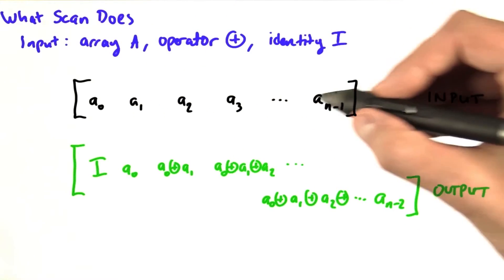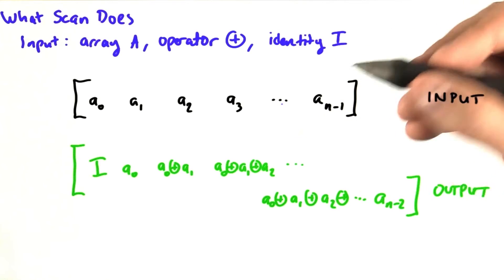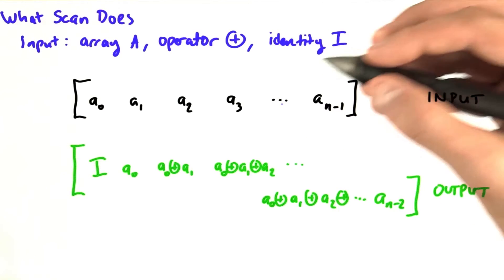So there's three inputs to scan. The first is an array of length n. The second is an operator, a binary associative operator. For the purposes of explaining this, we're going to assume that that operator is plus.